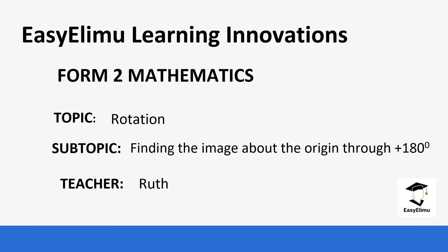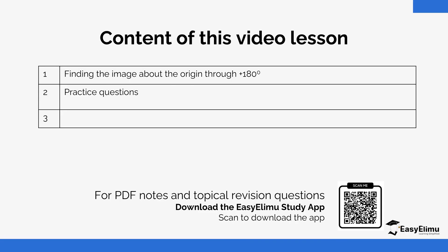Welcome to EasyLim Learning Simplified. My name is Ruth and today we're going to be learning form two mathematics. Our topic for today is rotation. We are going to be rotating an object to find the image through a rotation of positive 180 degrees. Positive rotation is anti-clockwise rotation.